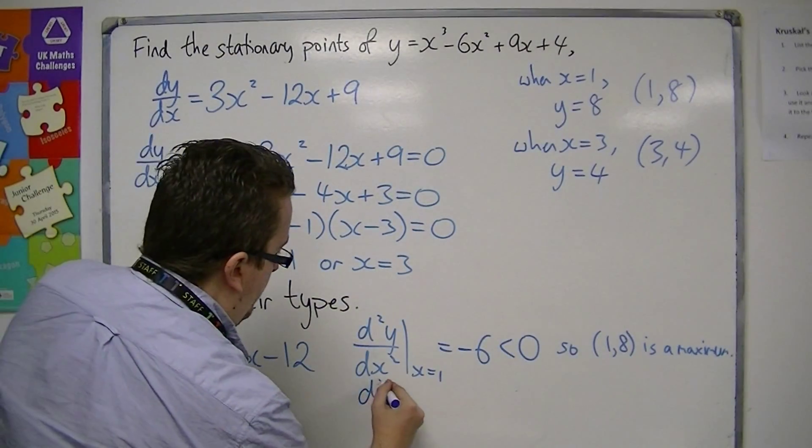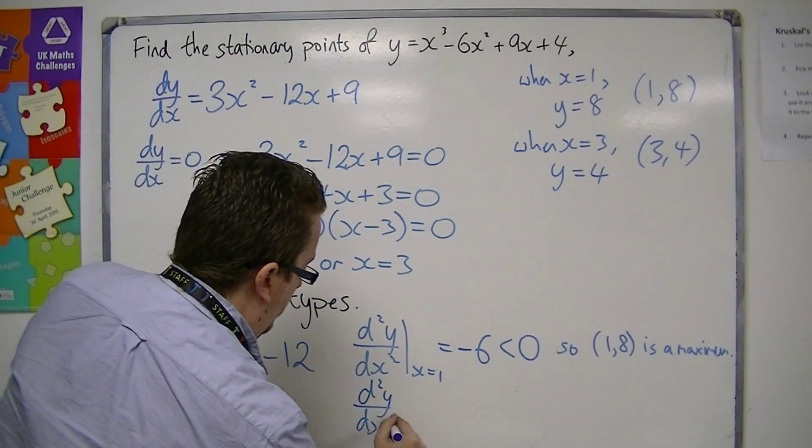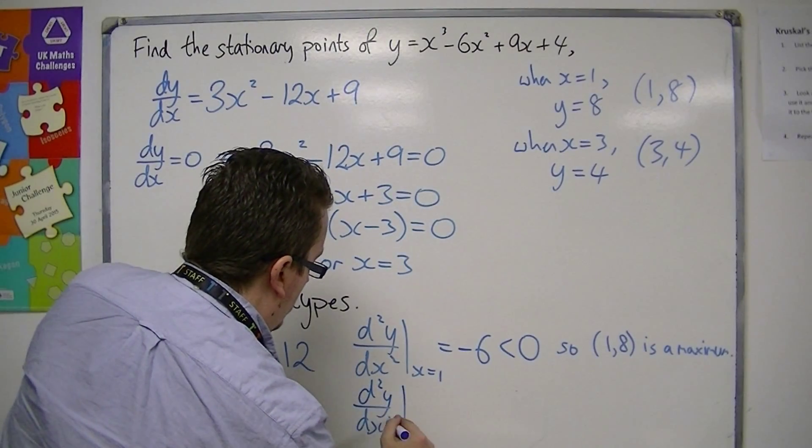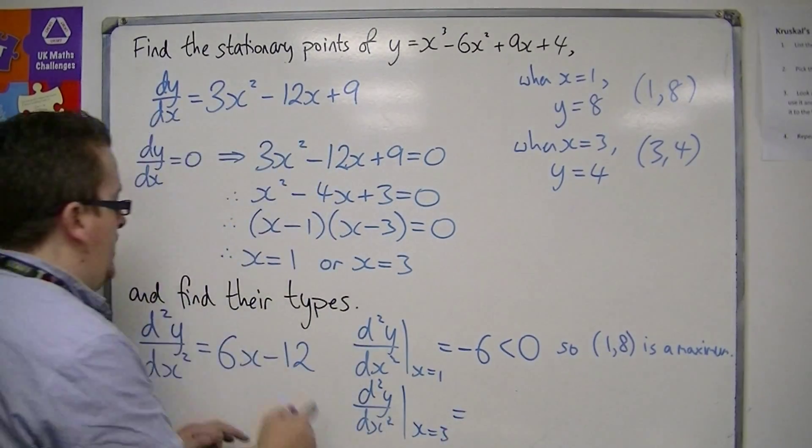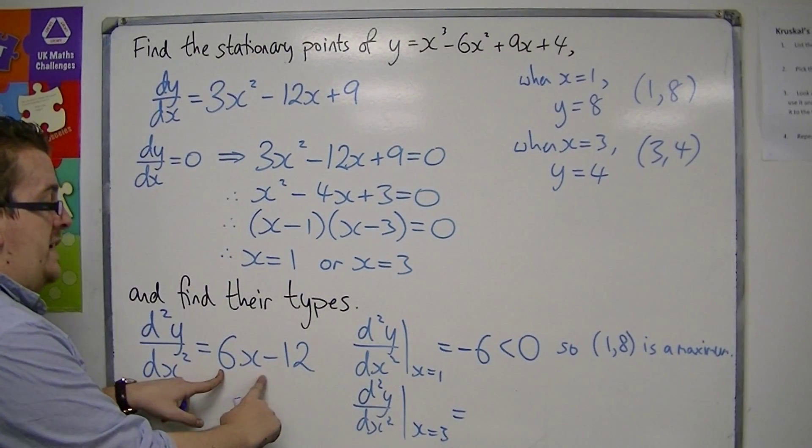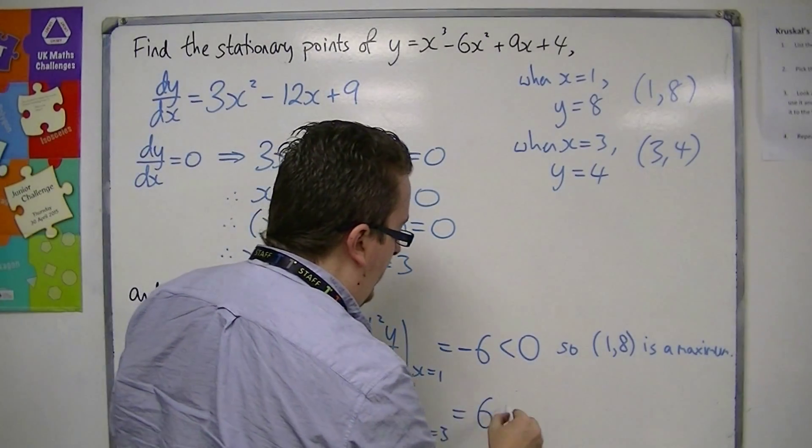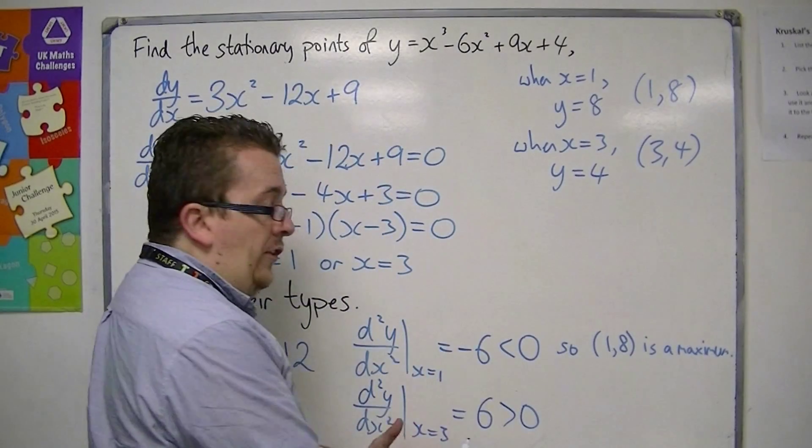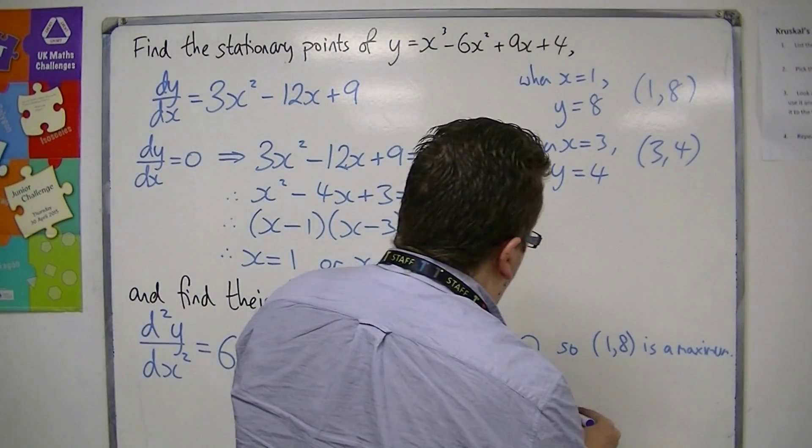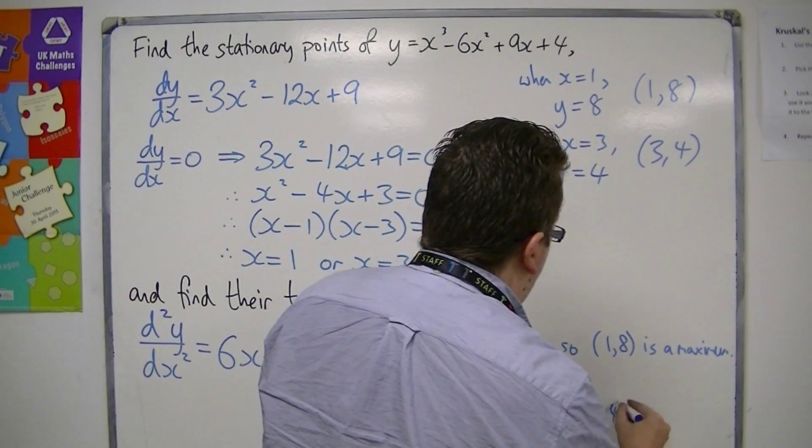And if you evaluate the second derivative at x equals 3, then you get 6 lots of 3 - 12, is positive 6. So because it's positive, that must mean that (3,4) is a minimum.